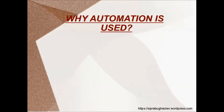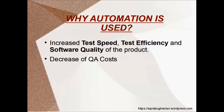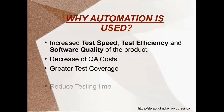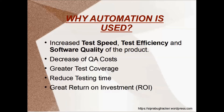Now we will see why automation is used. Automation testing is used to increase test speed, test efficiency, and software quality of the product. It is also used to decrease QA cost and to have greater test coverage. It helps in reducing testing time and automation testing provides a great return on investment.